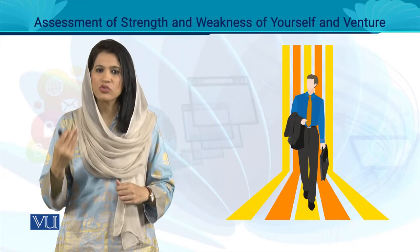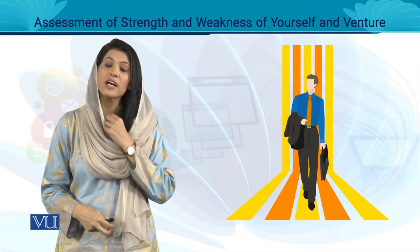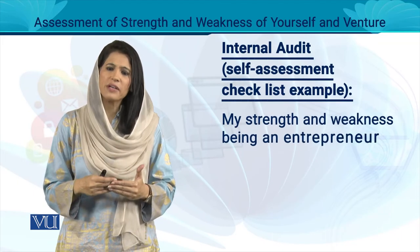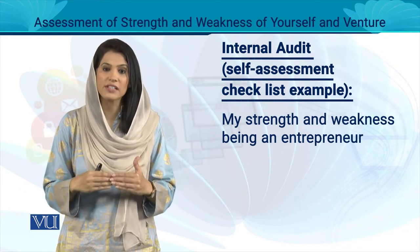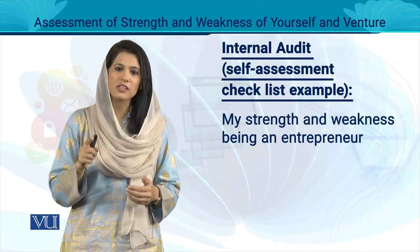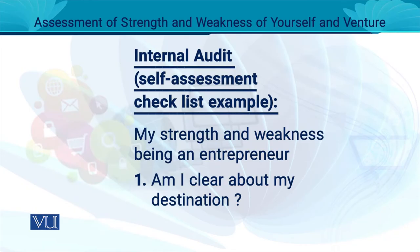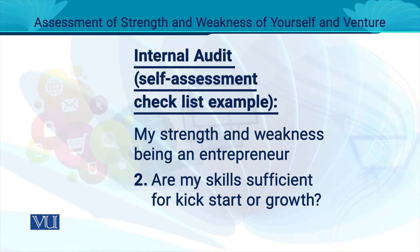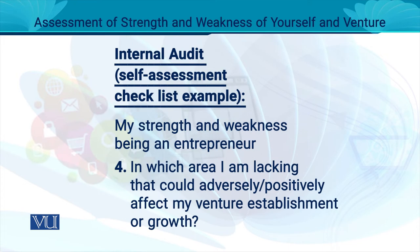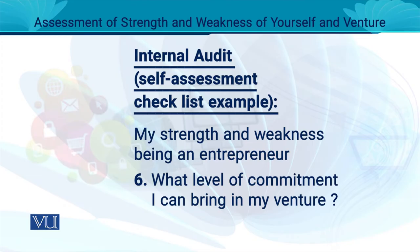When we talk about strengths and weaknesses related to your own self, we have discussed this in detail previously. Here is a checklist — an example — of questions you should ask yourself to identify your personal strengths and weaknesses, provided your business is not yet a registered entity with its own artificial identity: Am I clear about the destination? Are my skills sufficient for the kickstart or growth? What are my limitations? In which area am I lacking? Which factors could adversely or positively affect my career, venture establishment, or growth? Is my network worthy for establishing a new venture or growth? What is the level of commitment I can bring into my business venture?